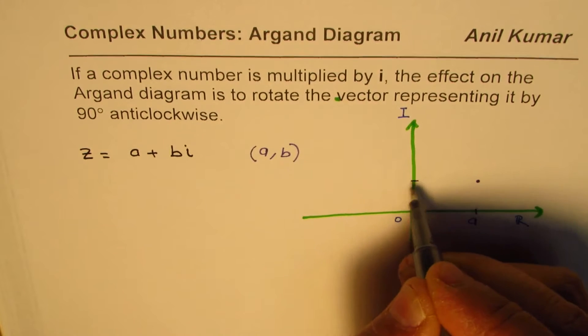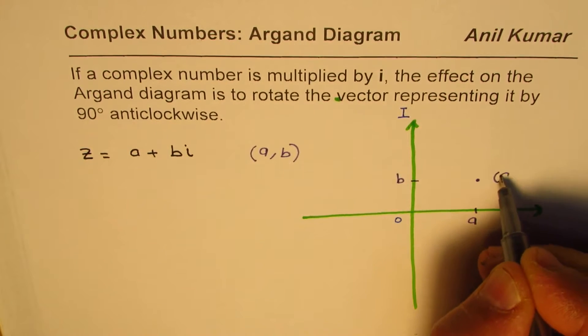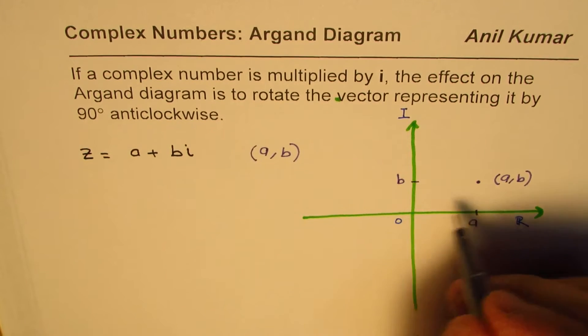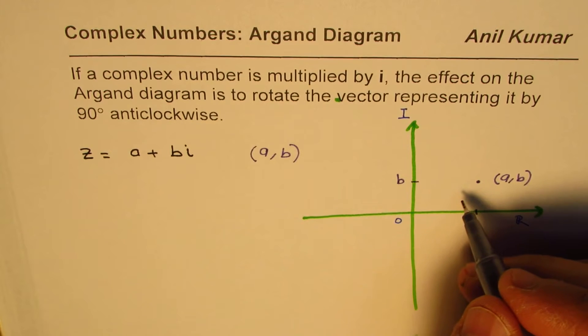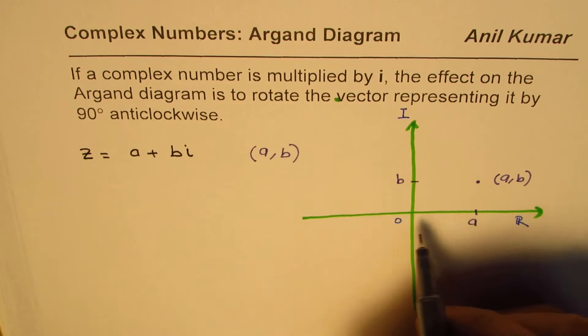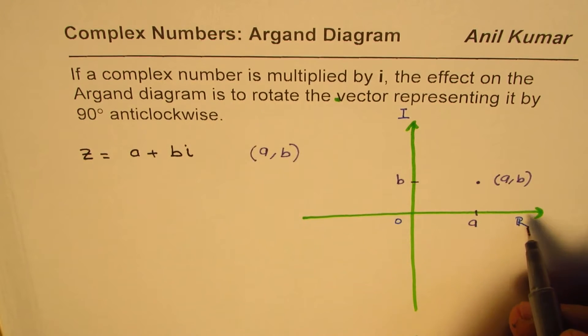Let us say this is b units, right? General. So, we are just taking a general point (a, b) to represent any complex number on this, similar to Cartesian plane, where the y-axis represents the imaginary part and the x-axis represents the real part.